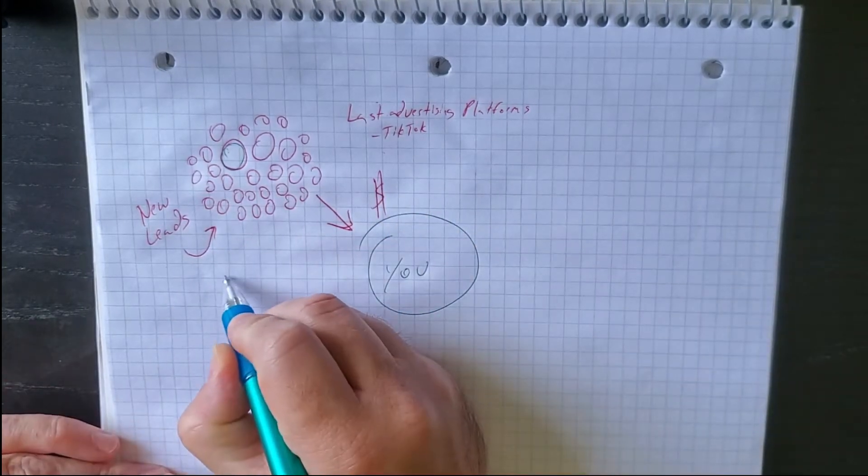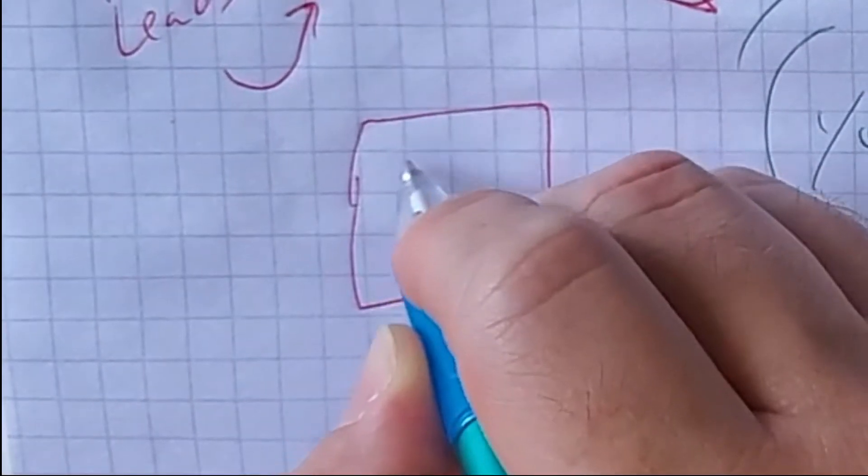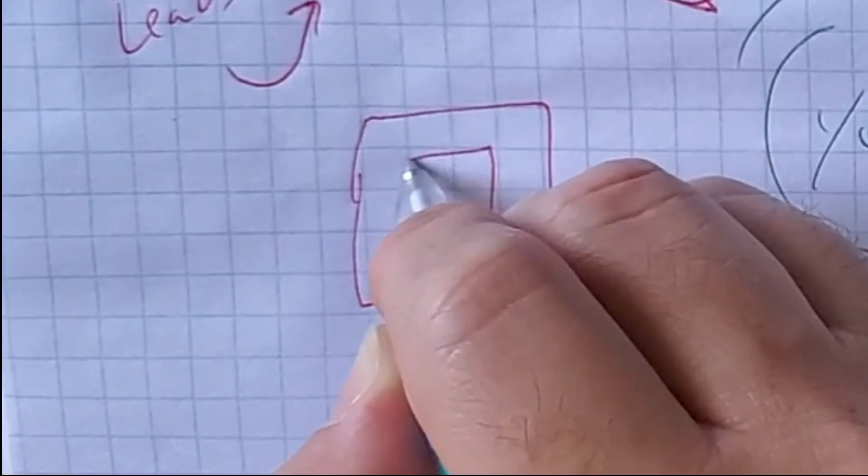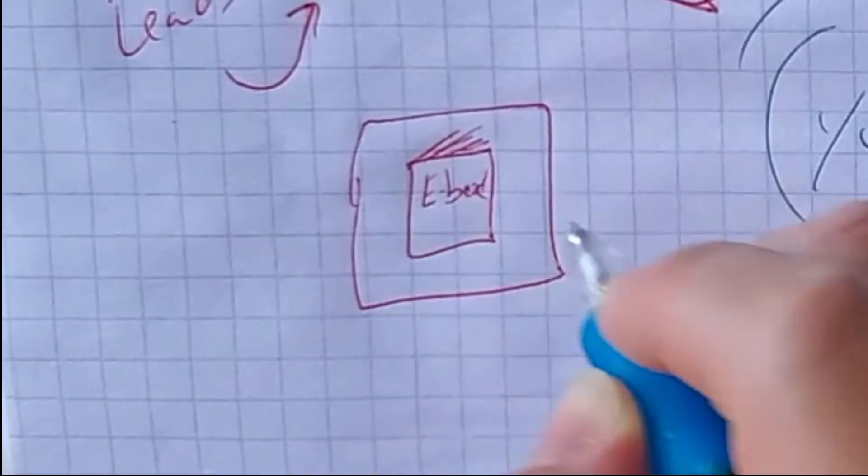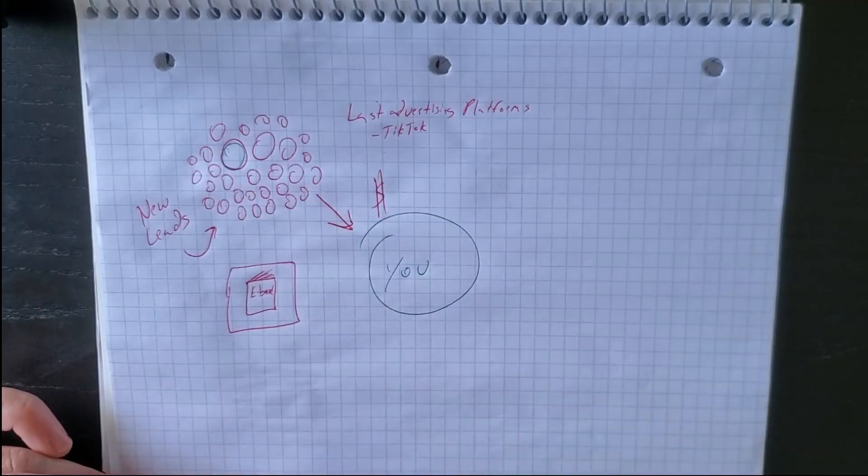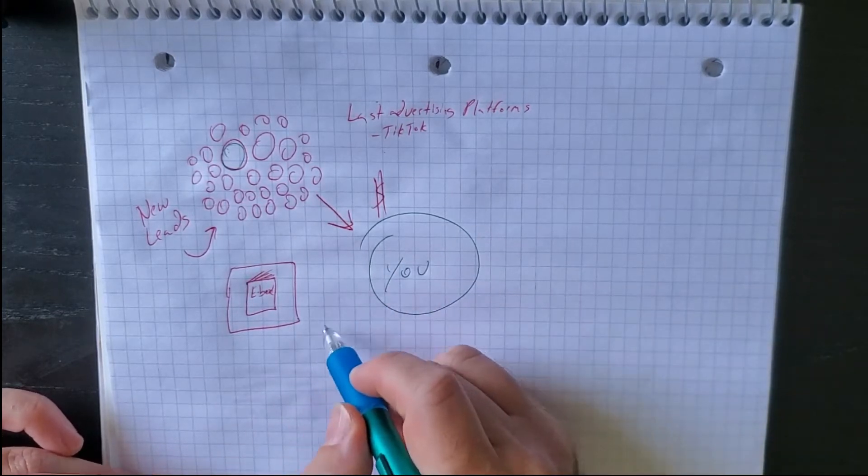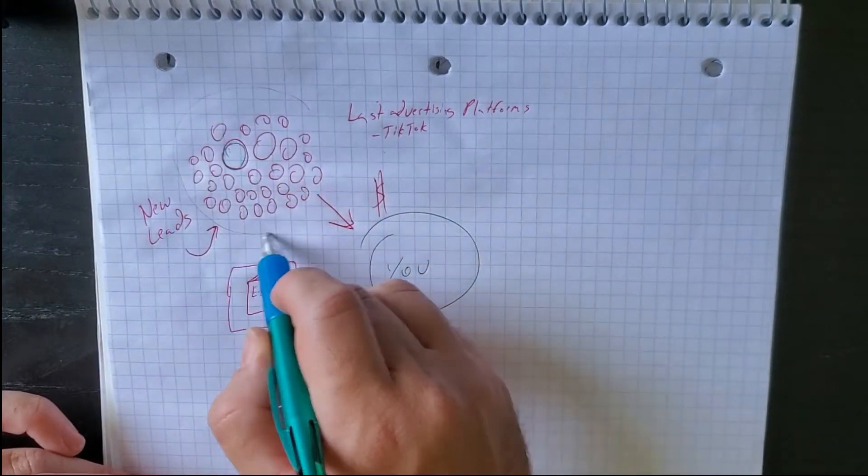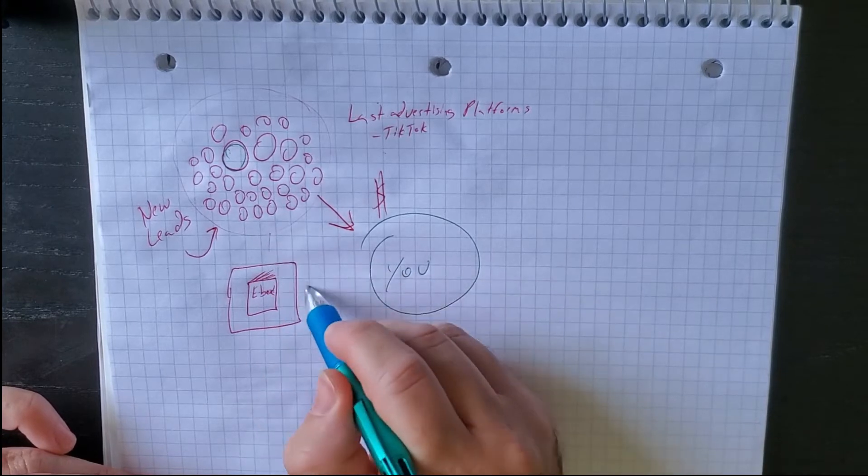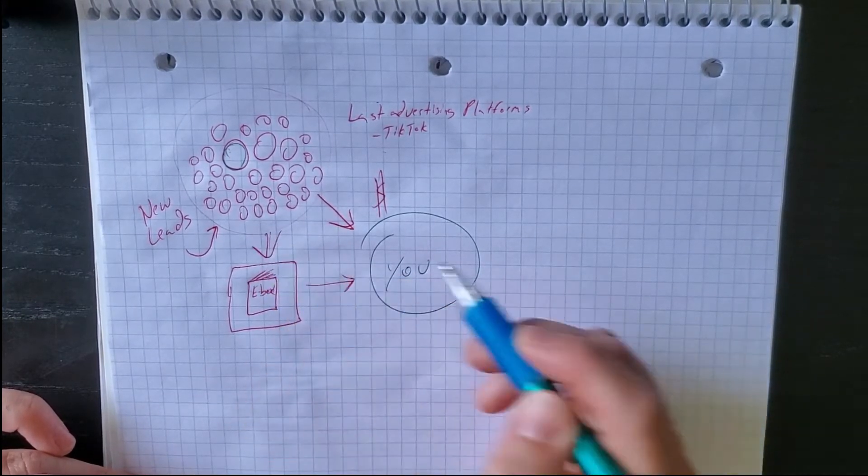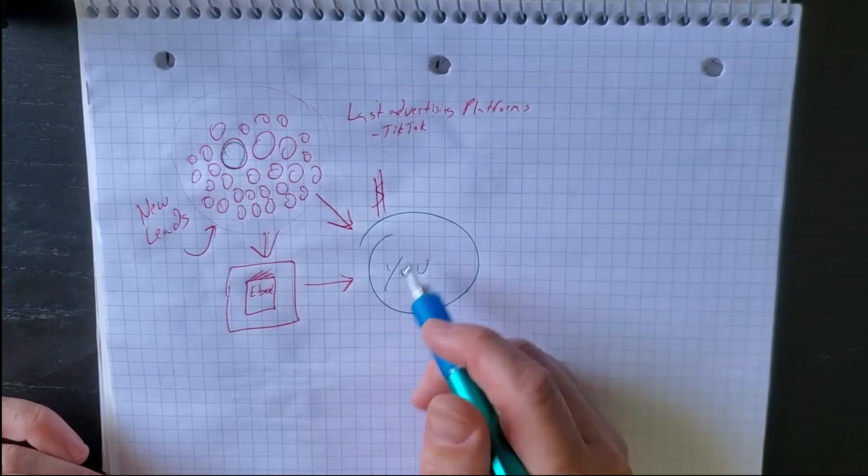The second thing that most business owners focus on is lead gen - maybe it's an ebook or a cheat sheet or a blueprint or a training series. They put all of their effort and time so they can attract this new audience to come to them and ultimately pay for the solution that they offer.